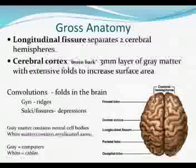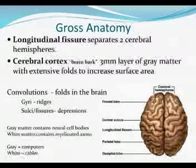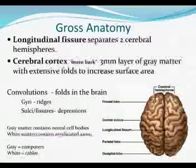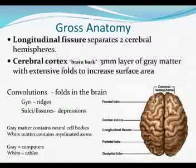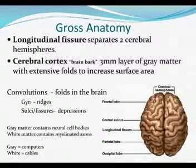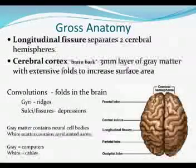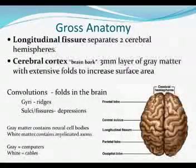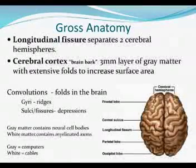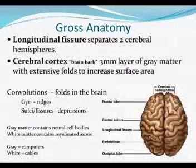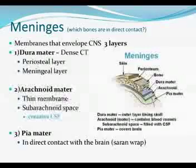The convolutions, made up of gyri and sulci, form the cerebral cortex. Looking at the brain from a superior view, you see two halves or two hemispheres — a left hemisphere and a right hemisphere. Along the middle, you see a very long depression or fissure called the longitudinal fissure, which effectively separates the two hemispheres.